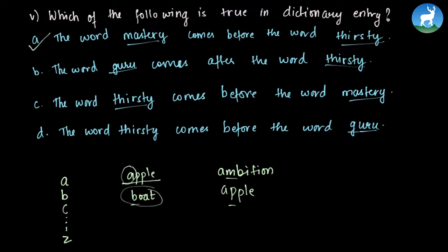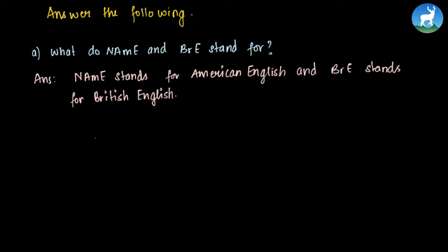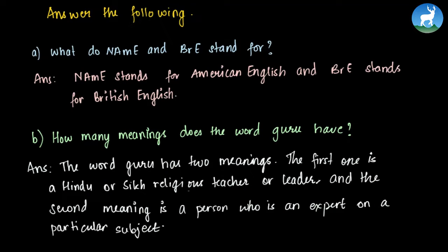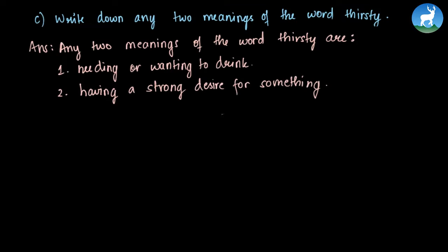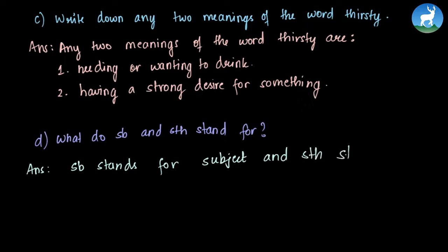Next we answer comprehension questions. NAME stands for North American English and BRE stands for British English. The word 'guru' has two meanings: a Hindu or Sikh religious teacher or leader, and a person who is an expert on a particular subject. Two meanings of 'thirsty' are: needing or wanting to drink, and having a strong desire for something. SB stands for 'somebody' and STH stands for 'something'.